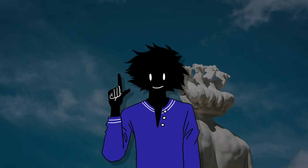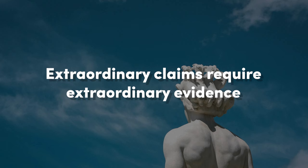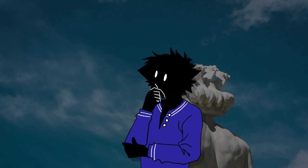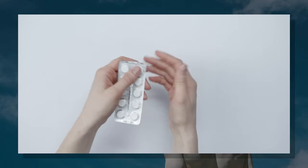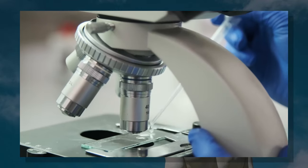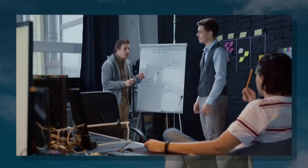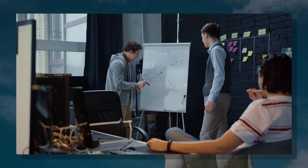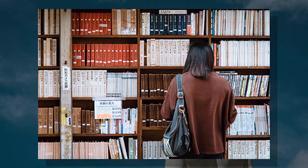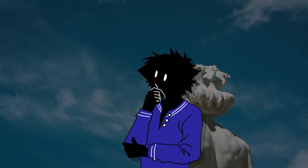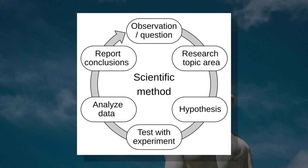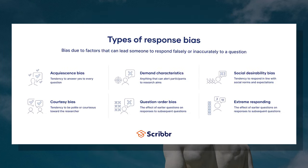Sagan's standard: a principle that says extraordinary claims require extraordinary evidence. This is a heuristic commonly used to decipher evidence-based science from pseudoscience. Let's say you created a new type of medicine that cures Alzheimer's. Based on our current research, we don't have a cure yet, so any claim like this must be put through rigorous scientific testing. Since the claim goes against all current scientific literature, the bar to prove that the medicine works would be pretty high — but not impossible to clear, as long as it's put through adequate scientific testing and any placebo effects or biases are ruled out.